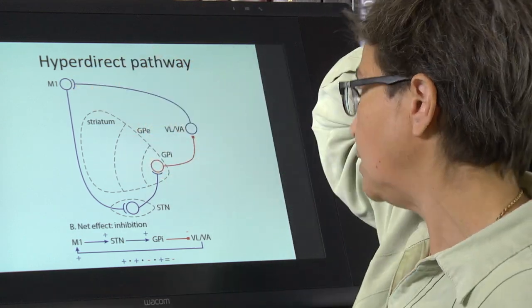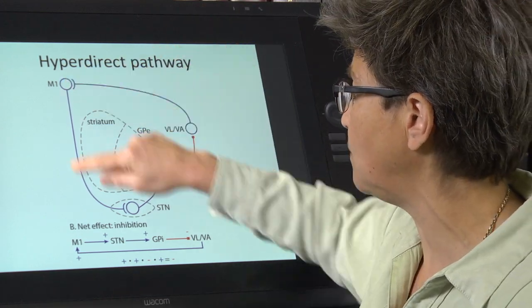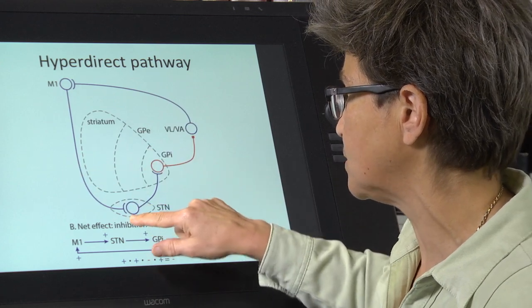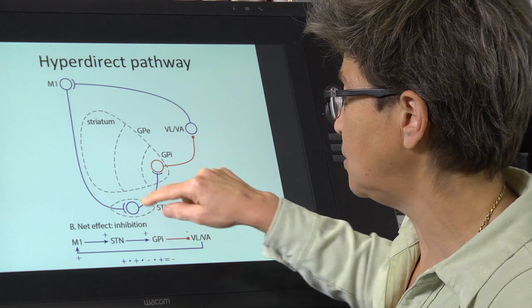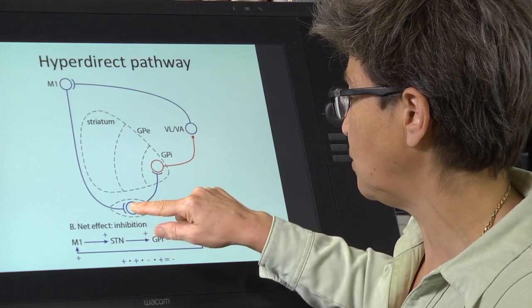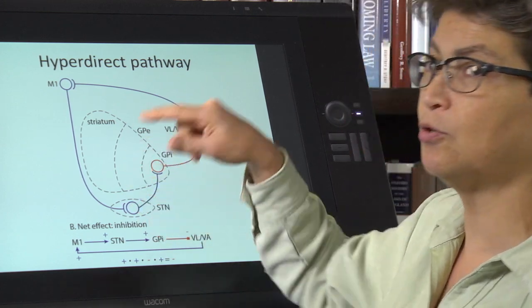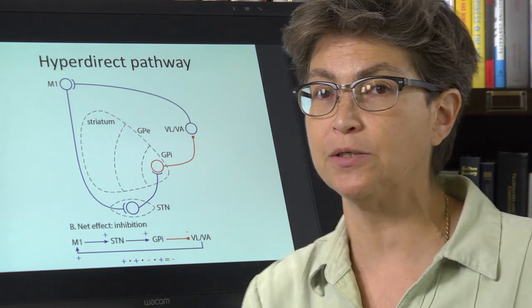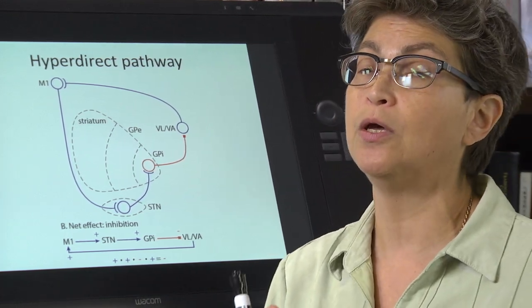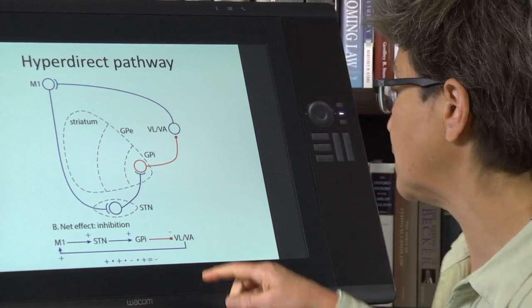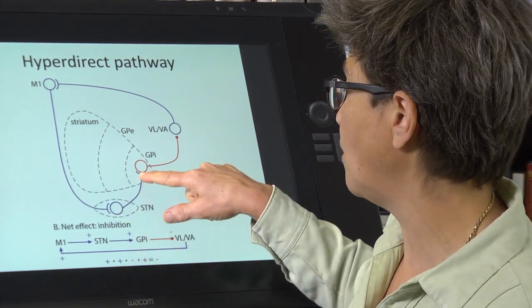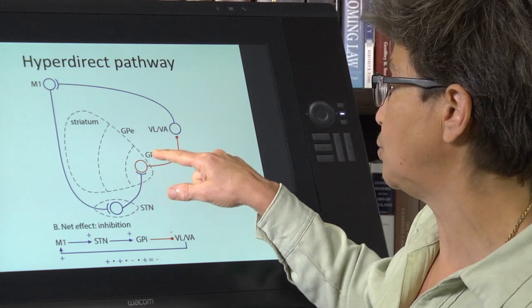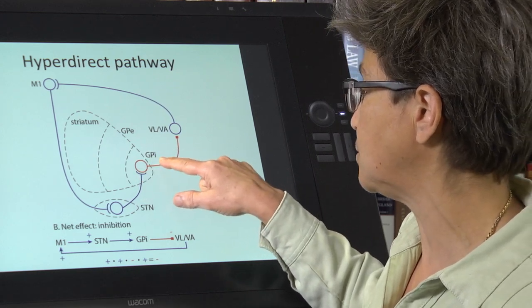In the case of the hyperdirect pathway, the input comes into the subthalamic nucleus. M1 projects into the subthalamic nucleus. The subthalamic nucleus is the only part of the basal ganglia where there is an excitatory neuron. These are excitatory glutamatergic neurons, and they project to the output, which I've shown here is globus pallidus internal.